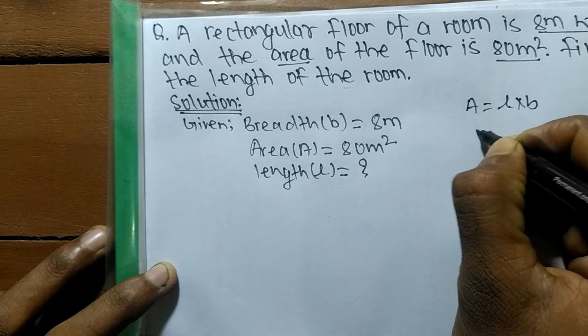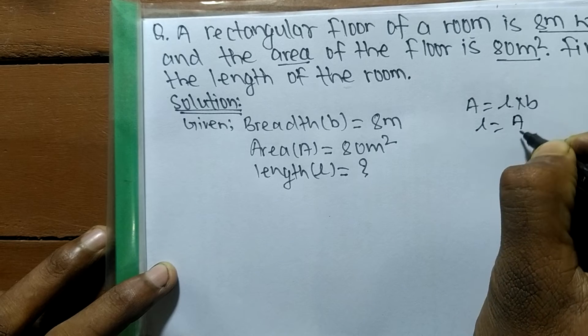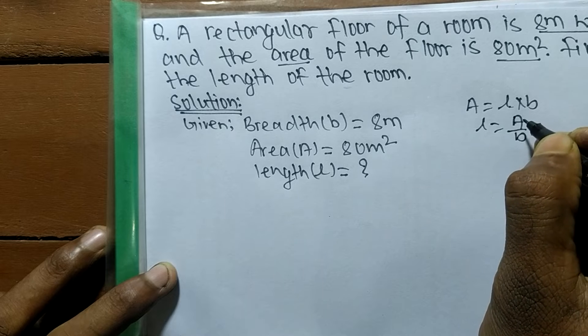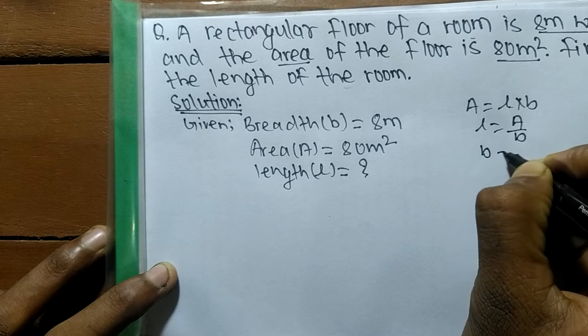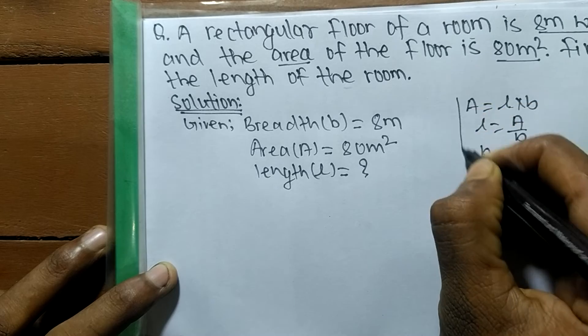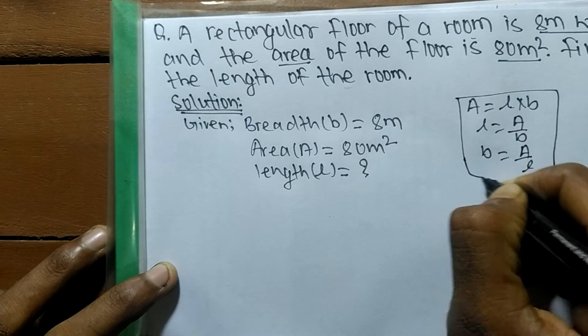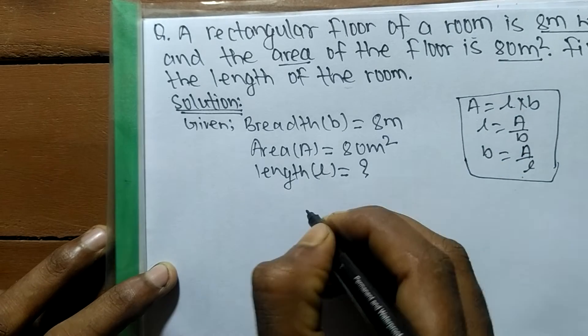When you have to find out l, then l is equal to A by b. And when we have to find out breadth, then b is equal to A by l. This is the basic formula for rectangle. In this case, we have to find out length.